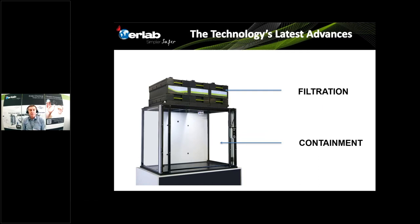The first technology is common between recirculatory filtration fume cupboards and ducted fume cupboards. It's called containment. And the other one is specific to recirculatory filtration fume cupboards: the ability to filter all the pollution emitted into the enclosure before recycling the air into the room. It's called filtration.